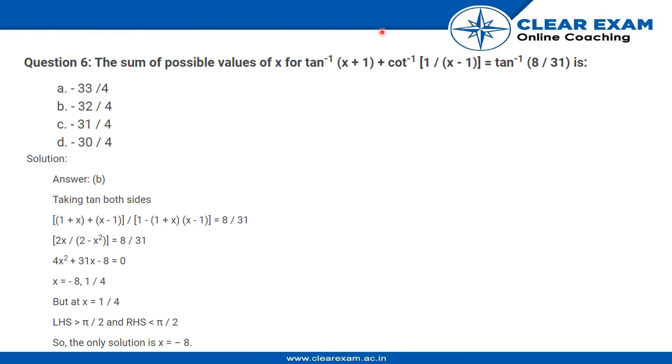What we will be left with is (1 + x) plus (x - 1), which is a plus b, the whole divided by 1 minus (1 + x) into (x - 1), which is equal to (a + b) upon (1 - ab), which is equal to 8 upon 31.